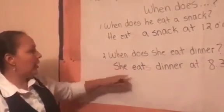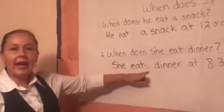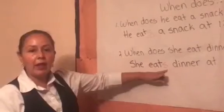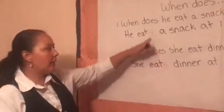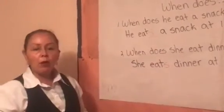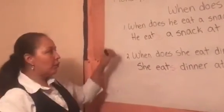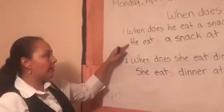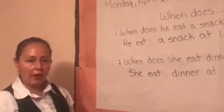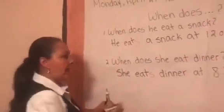He, she — write an S to the verb. Hay que escribirle una S al verbo cuando tengamos nuestros pronombres 'he' y 'she.' Okay, write exercise.